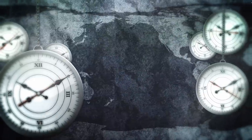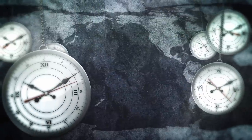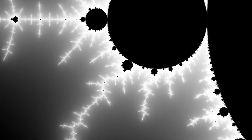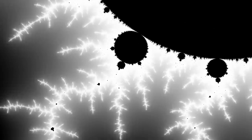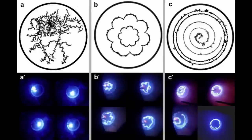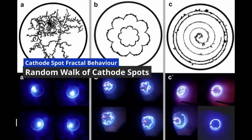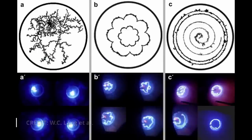Over the years, pieces of evidence emerged which showed that many of the features of cathode phenomena were fractal. Looking at the random walk of cathode spots, we see the movement of the discharge along a path. It is not the spot itself that is moving, but rather the location of ignition of emission sites.